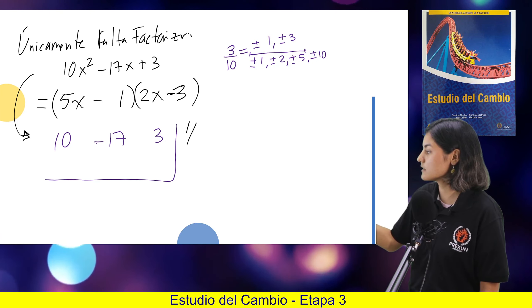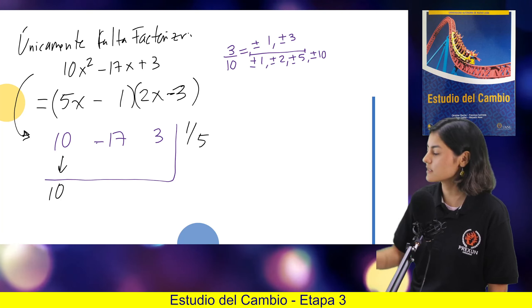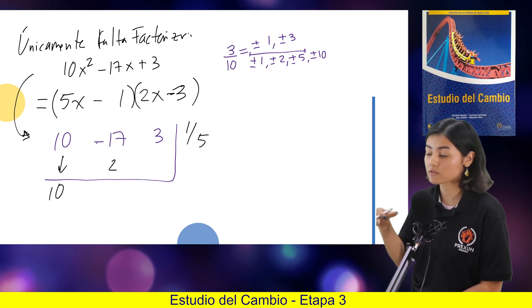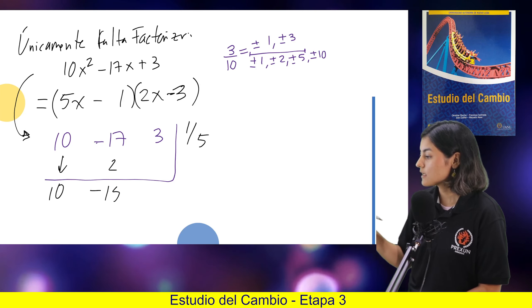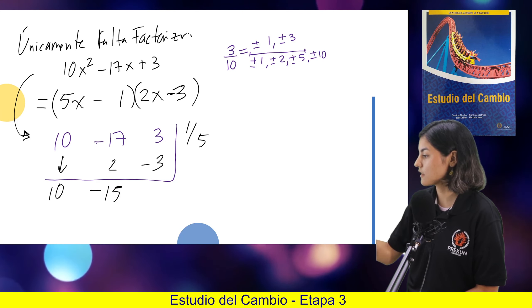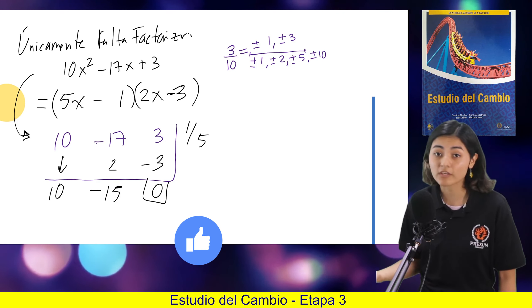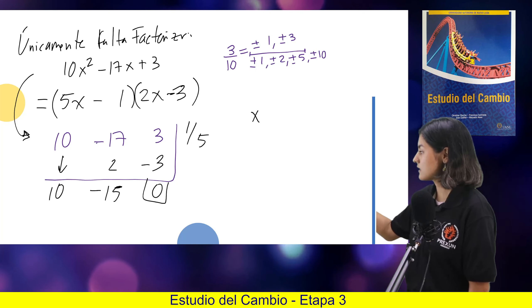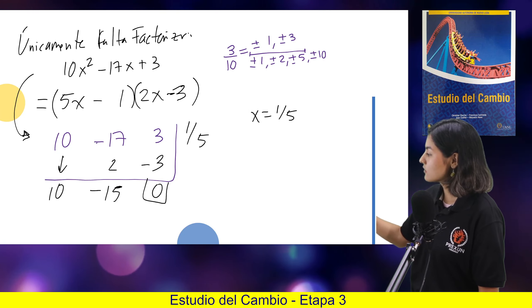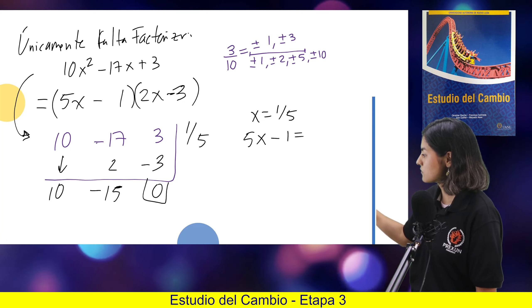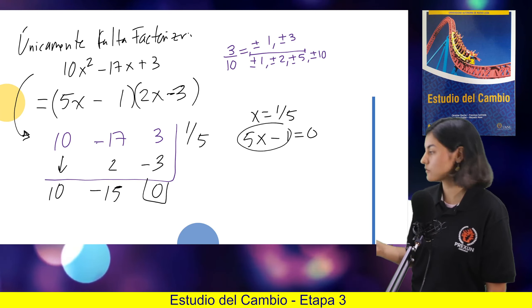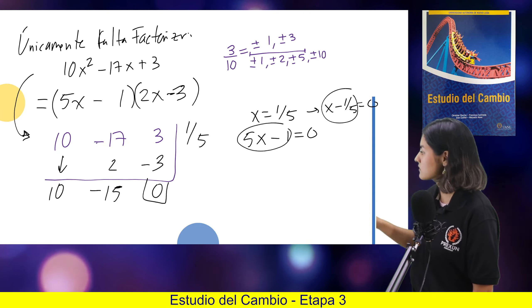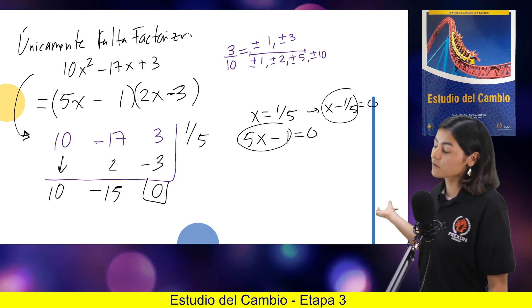Y lo podemos intentar. Y si se dan cuenta, bajamos el 10, 10 entre 5 nos da un 2, menos 17 más 2 nos da un menos 15, y menos 15 entre 5 es un menos 3. Y aquí nos queda un 0. Entonces, el 1 quinto es una raíz. Y entonces, x igual a 1 quinto es una raíz, y entonces el 5x menos 1 es un factor. O bien, también lo pueden escribir así, x menos 1 quinto. Esos son idénticos las dos cosas.